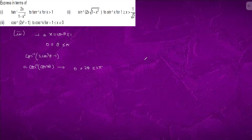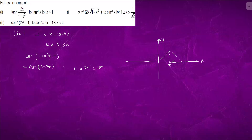We know that the graph of cos⁻¹ looks like this — from 0 to π, then from π to 2π, the equation of the second branch is –x + 2π.